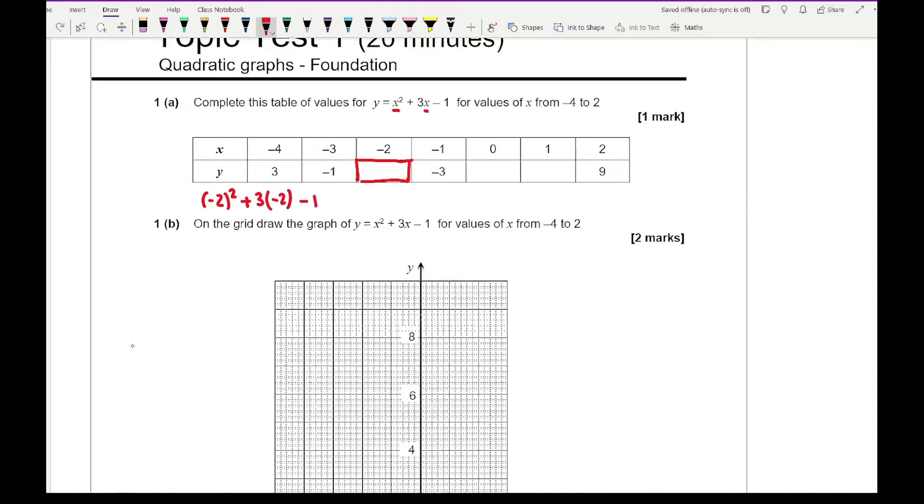If it was on a calculator paper that's exactly what I would type in. Minus 2 squared is positive 4 because 2 times 2 is 4 and a minus multiplied by a minus gives me a positive answer. And 3 times minus 2 is minus 6 and we've got minus 1. So 4 minus 6 is minus 2, minus 1 is minus 3.